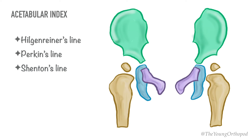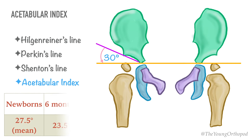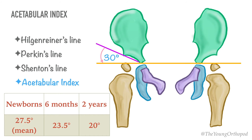The acetabular index is an angle formed by the intersection of Hilgenreiner's line and the line drawn along the acetabular surface. This angle changes as the infant grows. The normal upper limit of the acetabular index is approximately 30 degrees. Any significant increase in this measurement may be a sign of acetabular dysplasia.